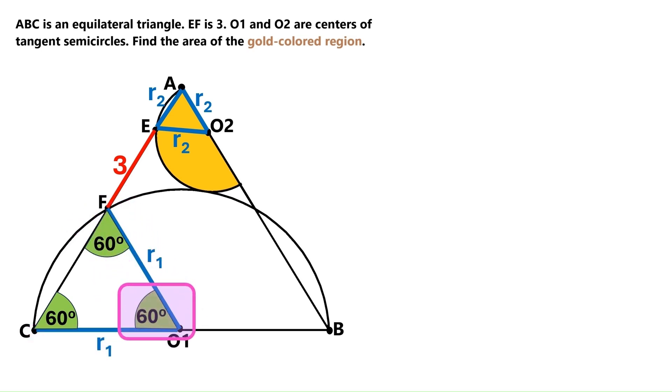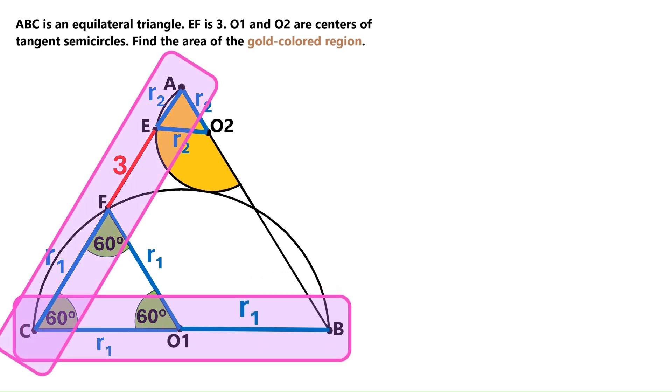Consequently, the third angle is 60 degrees too. This triangle is equilateral, so this segment is also R1, and this segment is R1/2, because it coincides with the radius of the big semicircle. Now, these are the sides of the equilateral triangles, so they are equal to each other.